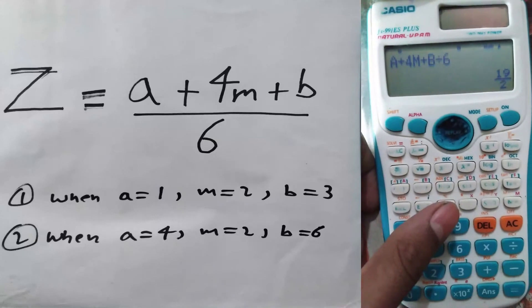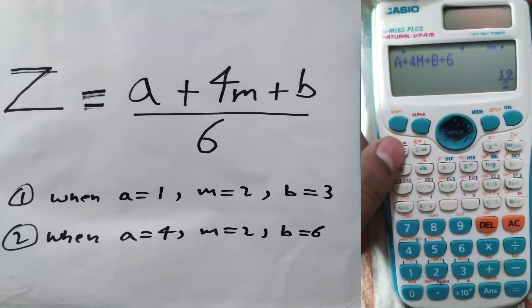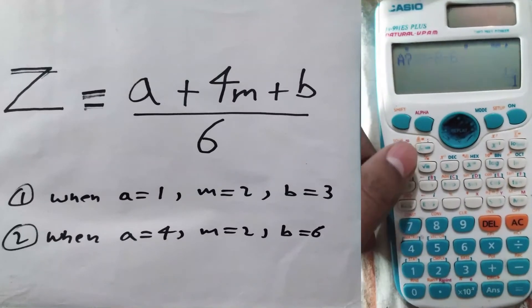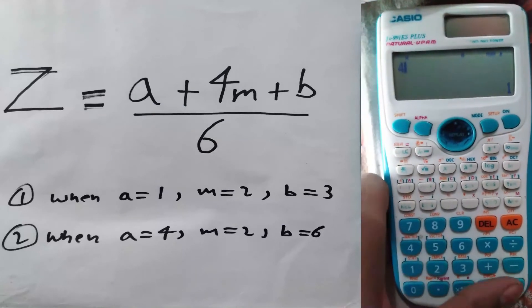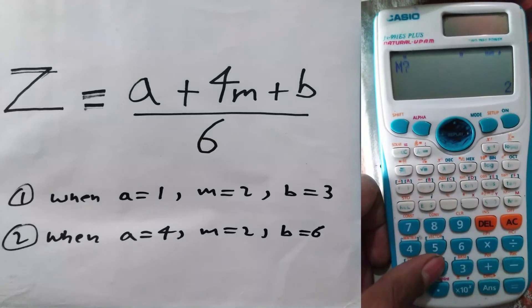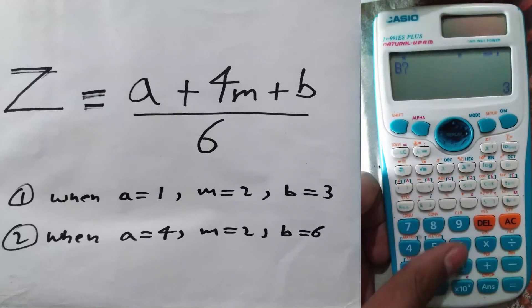Now I will calculate it again, so I will press calc. Now I will give the a as 4, equals, and m as 2, press equals, then b as 6, equals.